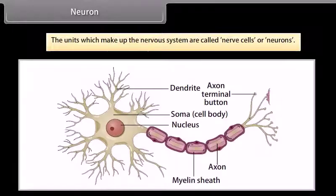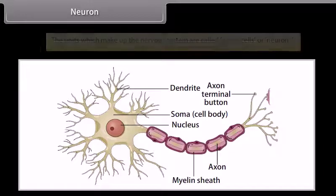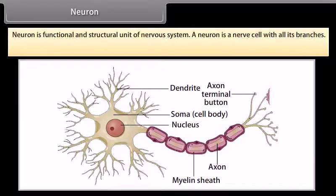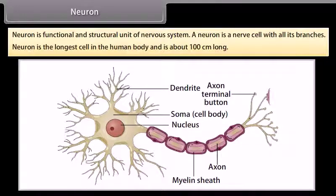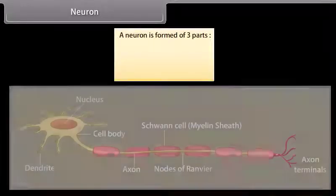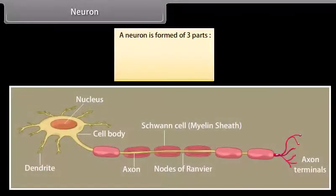The units which make up the nervous system are called nerve cells or neurons. A neuron is the functional and structural unit of the nervous system. A neuron is a nerve cell with all its branches and is the longest cell in the human body, about 100 cm long. A neuron is formed of three parts: cytone, dendrites, and axon.